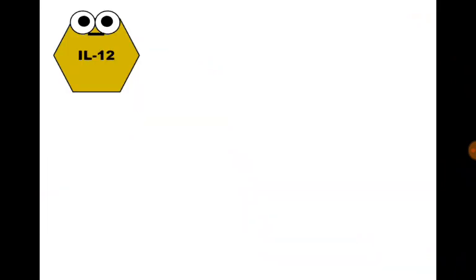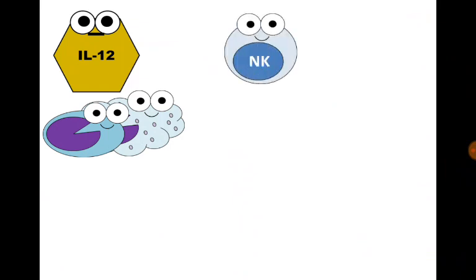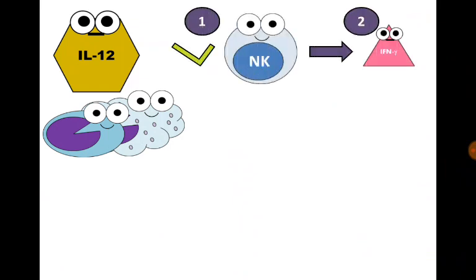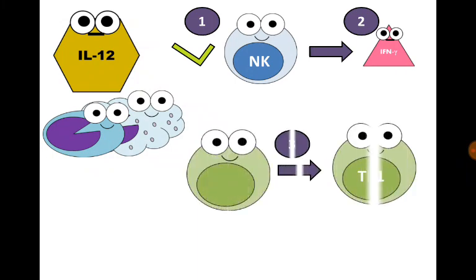Next, interleukin-12. As mentioned, it is produced by monocytes and macrophages to activate natural killer cells to produce interferon gamma, and to stimulate T helper cells to differentiate into T helper 1 cells to produce interferon gamma.